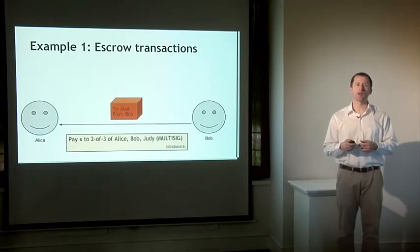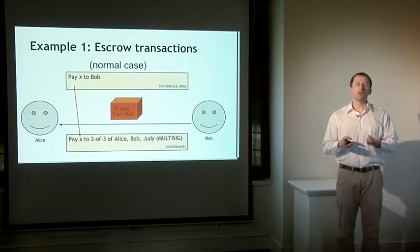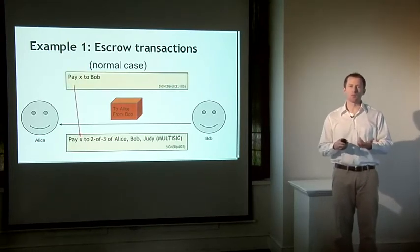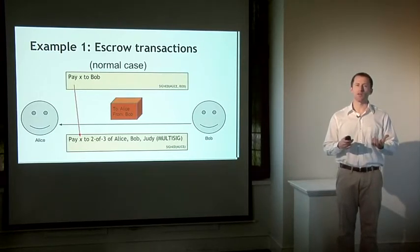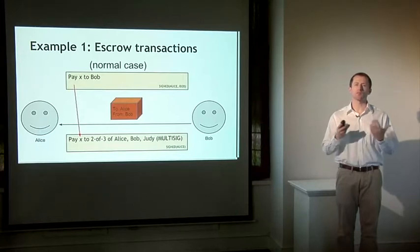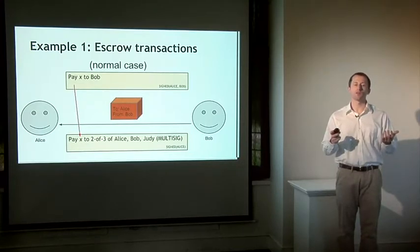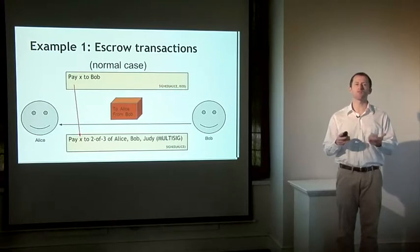Bob will be satisfied after that happens that he's safe sending the goods over to Alice, so he'll mail them or deliver them physically. What we hope happens in the normal case is that Alice and Bob are both honest, in which case the goods arrive on time, they're what Alice was expecting, and she wants to actually release the money from escrow so that Bob can spend it. If this happens, Alice and Bob can both sign a transaction redeeming the funds from escrow and sending them to Bob. The great thing here is that Judy never had to get involved at all — there was no dispute. Alice and Bob were able to sign, and that represents two out of the three people required by the multi-sig transaction.